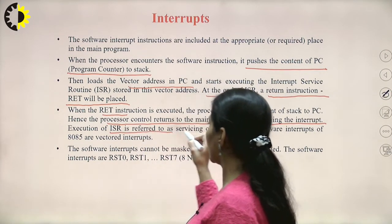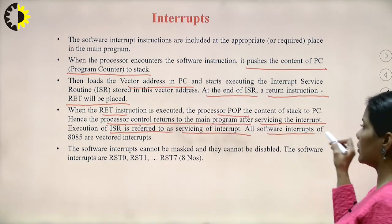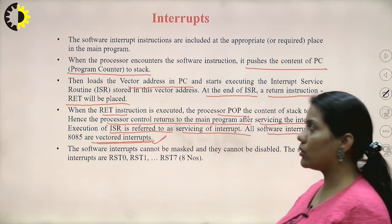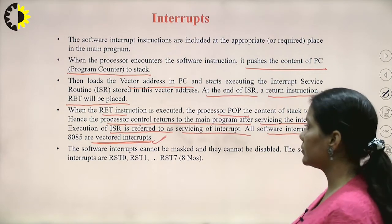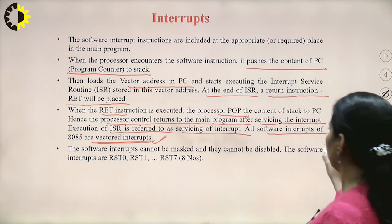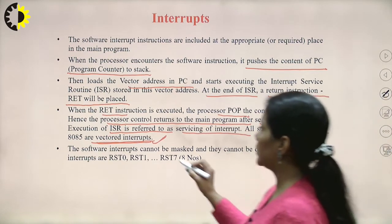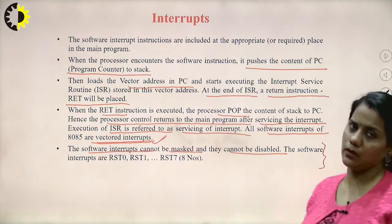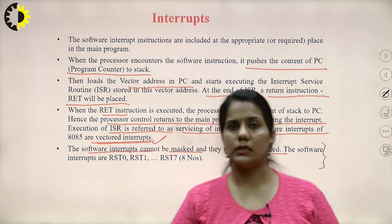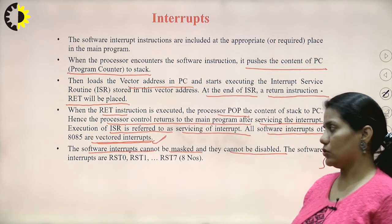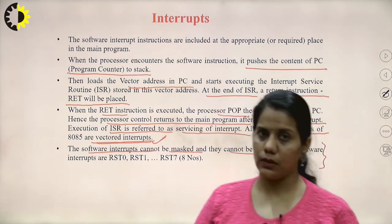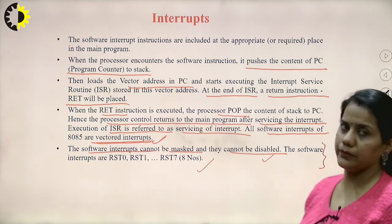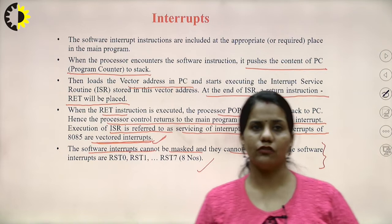When the return instruction is executed, the processor pops the contents of the stack to the PC, and control returns to the main program after serving the interrupt. Execution of the interrupt service routine is referred to as servicing of the interrupt. All software interrupts of 8085 are vector interrupts. An important point: these software interrupts cannot be masked and they cannot be disabled — they are non-maskable. The software interrupts are 8 in number.